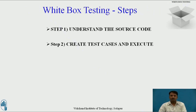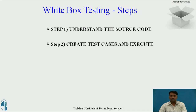Steps involved in white box testing are: understanding the source code, creating test cases, and executing. In the first step, the tester must be very knowledgeable in the programming language used in the application they are testing, and must be highly aware of secure coding practices, able to find security issues and prevent attacks from hackers and naive users who might inject malicious code. In the second step, the tester tests the application's source code for proper flow and structure by writing more code — little tests for each process — and this is often done by the developer.